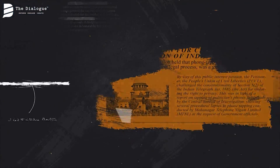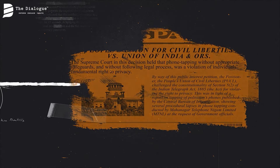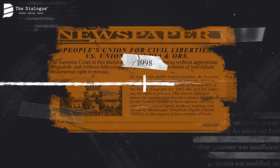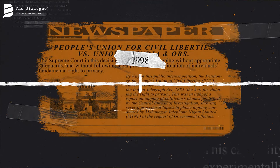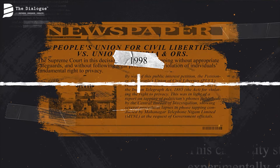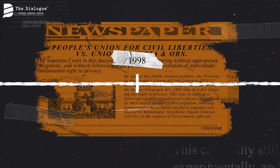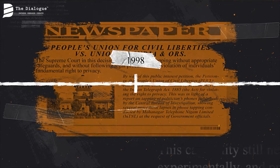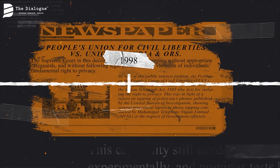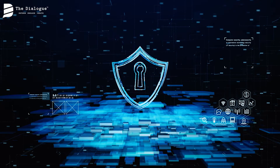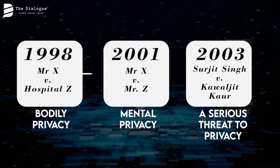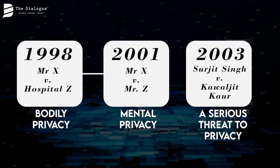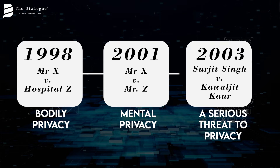In four years' time, the PUCL case of 1998 studied the relationship between privacy and communications. It was a significant victory in many ways, leading to legislative action and guidelines for intercepting communication. But privacy still had a long way to go. From defining contours of bodily and mental privacy to protecting private information, many things were still left to be decided upon.